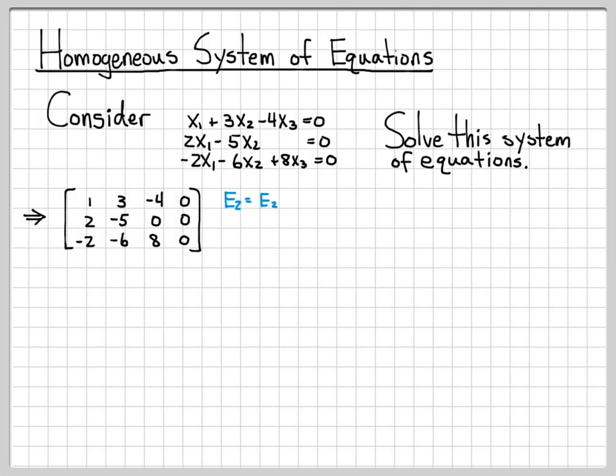Now I can perform row operations on this augmented matrix to solve the equations. I'm going to let equation two equal itself minus two times equation one to get rid of this two, and let equation three equal itself plus two times equation one to get rid of this negative two. Equation one remains unchanged, equation two is transformed, and equation three ends up as the all zero row.